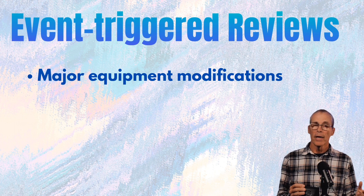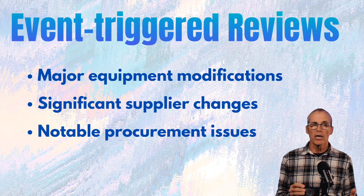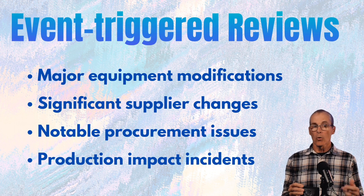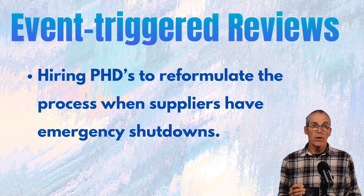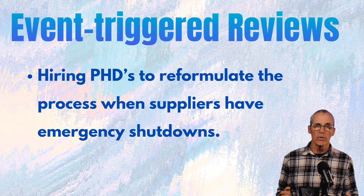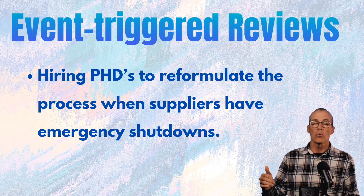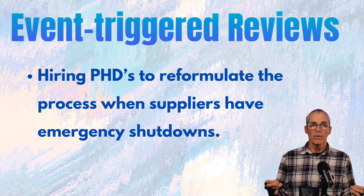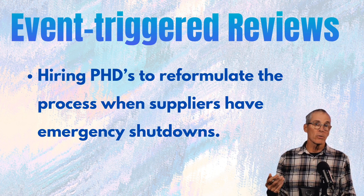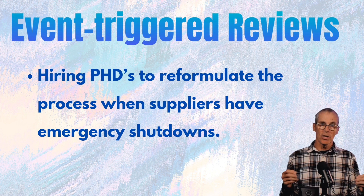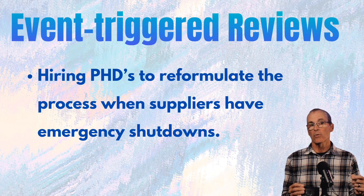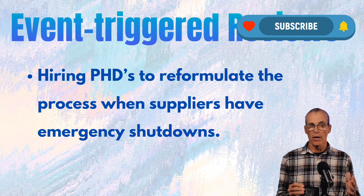There are also events that could trigger reviews: a major equipment modification, significant supplier changes, notable procurement issues, or production impact incidents. Additionally, one creative example — a chemical manufacturer who suffered supply chain disruption during a winter storm hired PhD scientists to reformulate their products based on whatever raw materials were available in the marketplace. That was a very creative way to manage business interruption impact and change your process on the fly.